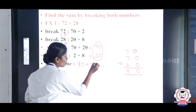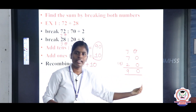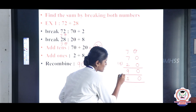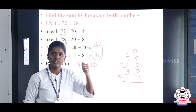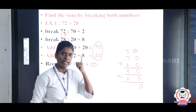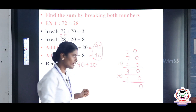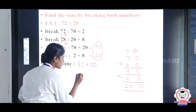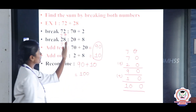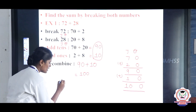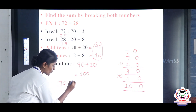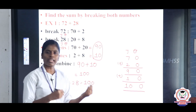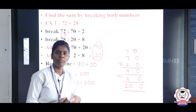Now recombine: 90 plus 10. Write place values — ones, tens. For 90: ones is 0, tens is 9. For 10: ones is 0, tens is 1. Add: 0 plus 0 equals 0. Tens: 9 plus 1 equals 10. So the final answer is 100. The question 72 plus 28 equals 100. Topic: find the sum by breaking both numbers.